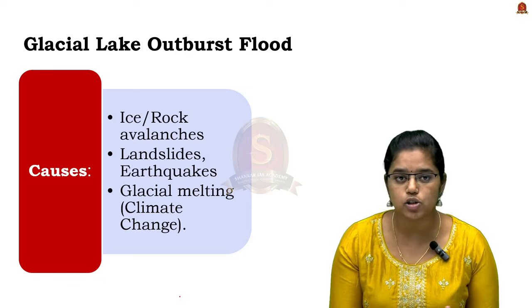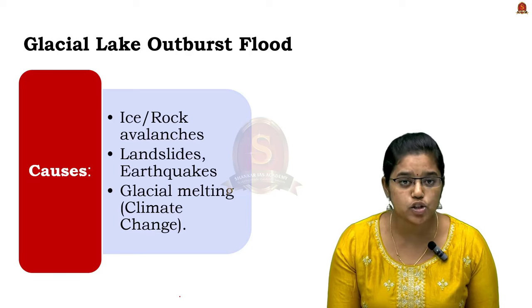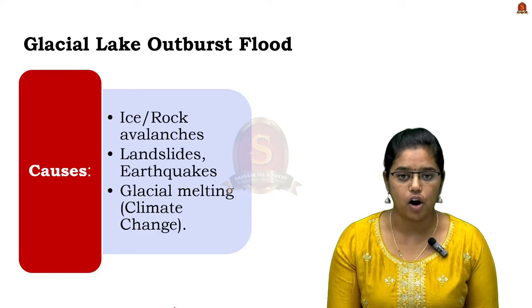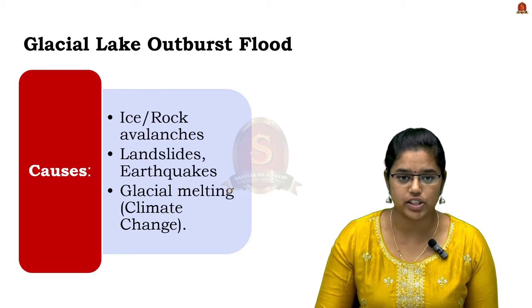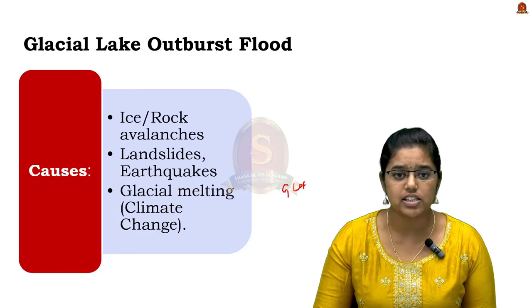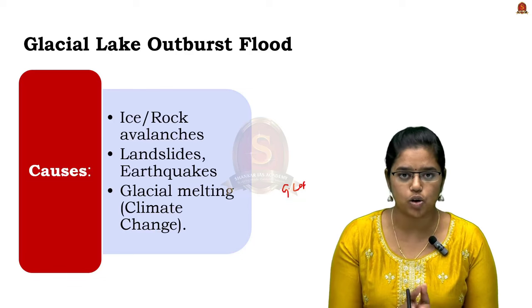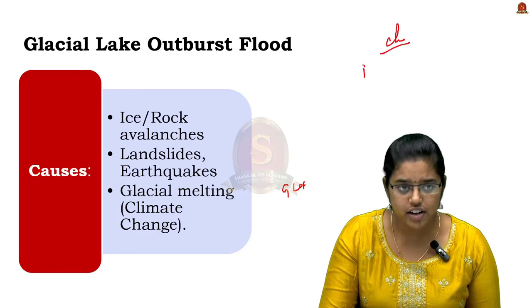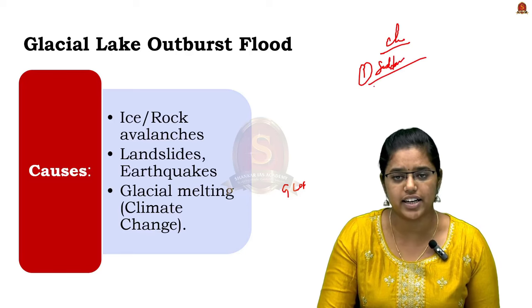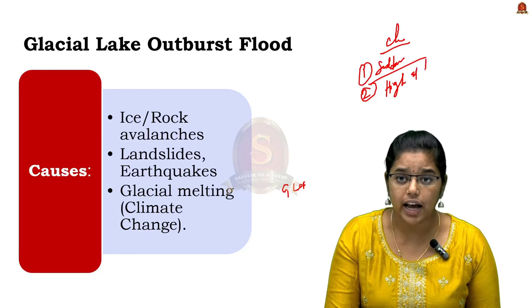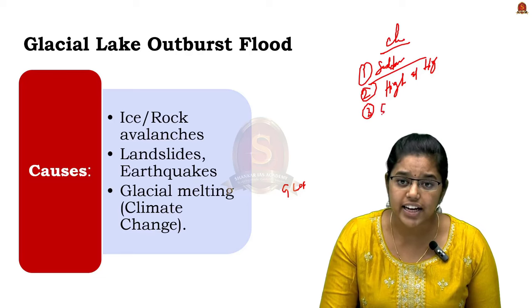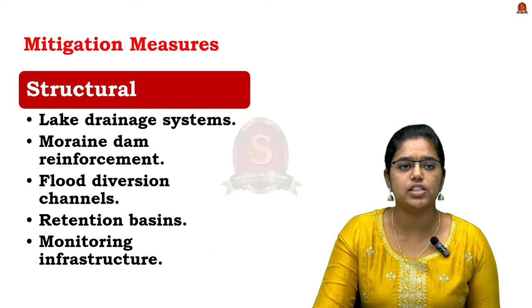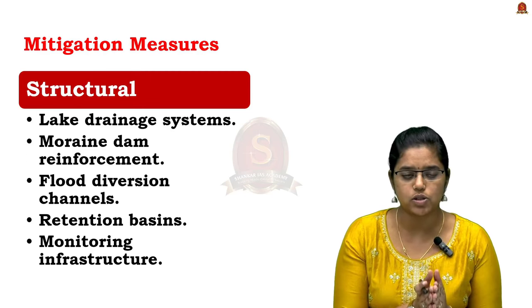A glacial lake outburst flood (GLOF) is a sudden release of water from a glacial lake caused by the breach of a natural moraine or ice dam. Causes include ice or rock avalanches and landslides into the lake, earthquakes, and melting of glaciers due to climate change. The typical characteristics of GLOF are: sudden onset, high velocity and high volume of water, and high destructive potential.